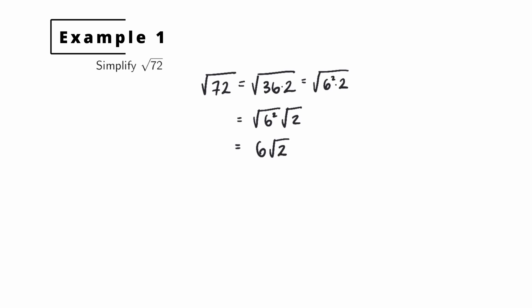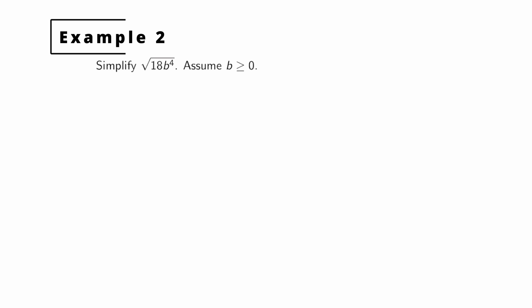Now the radical sign has no perfect square factors underneath it, so we consider this simplified. Example 2: simplify the square root of 18b to the 4th. We'll assume b is non-negative. If b were negative we could still simplify, but it makes things complicated, so we'll assume it's non-negative.